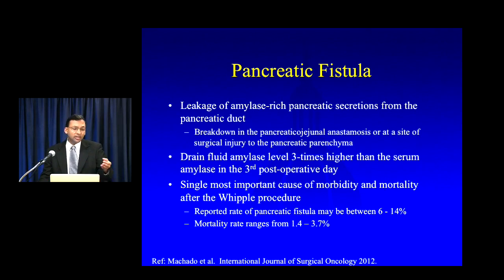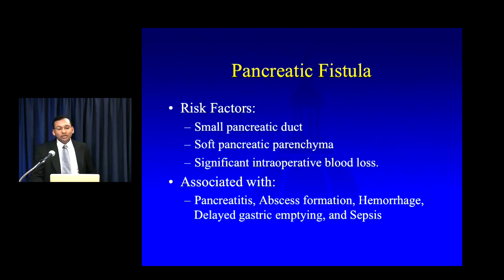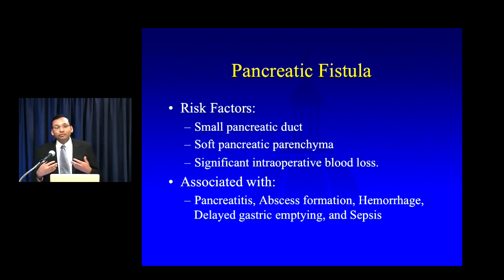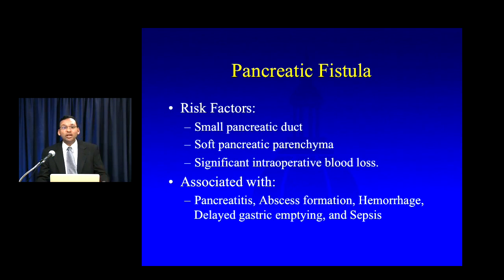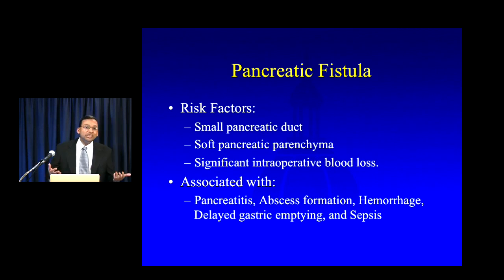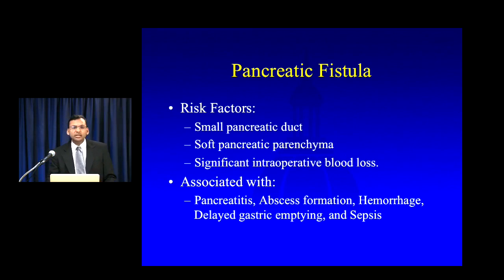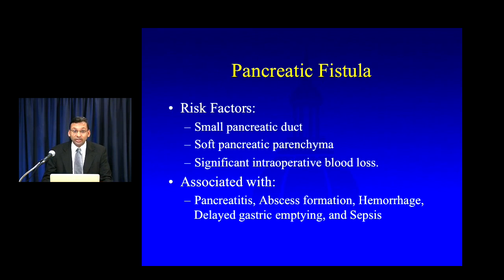This is the single most important cause of morbidity and mortality after the Whipple procedure — the one the surgeons are always the most worried about. Risk factors include having a relatively small pancreatic duct, soft pancreatic parenchyma, or lots of intraoperative blood loss. There's also an association with other complications: if you have a pancreatic fistula, you're more likely to have sepsis, pancreatitis, form an abscess, hemorrhage, or develop delayed gastric emptying. The odds are that you'll develop other major complications and have a much poorer clinical outcome.